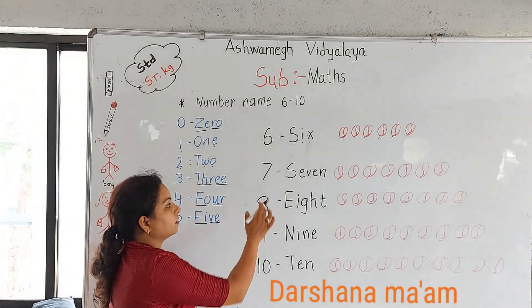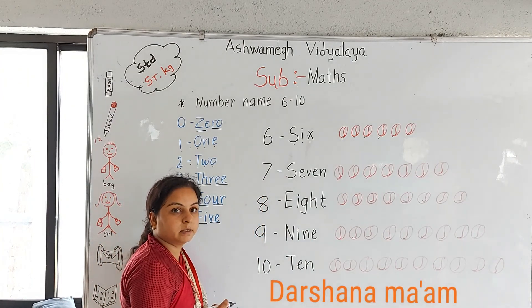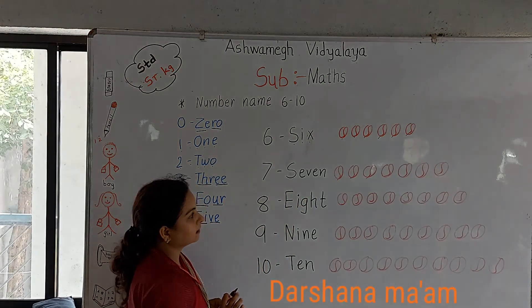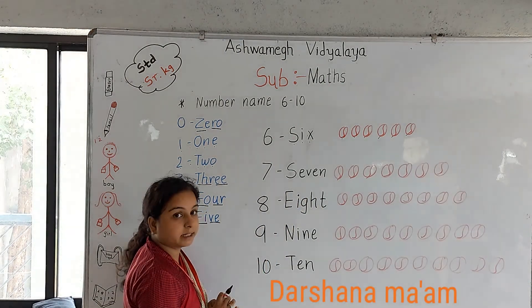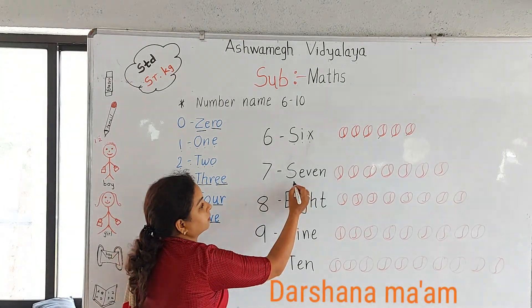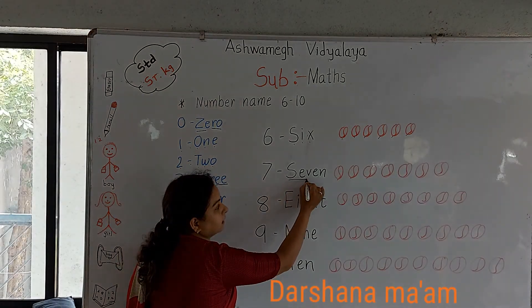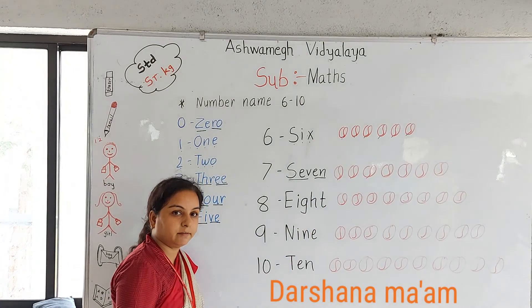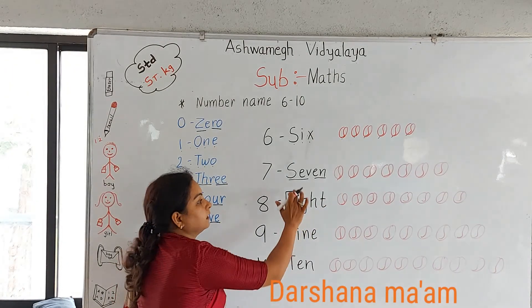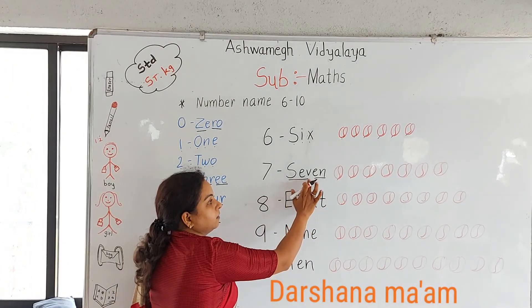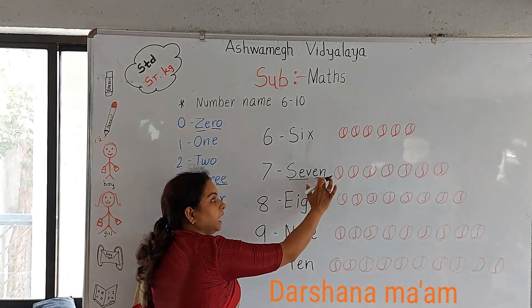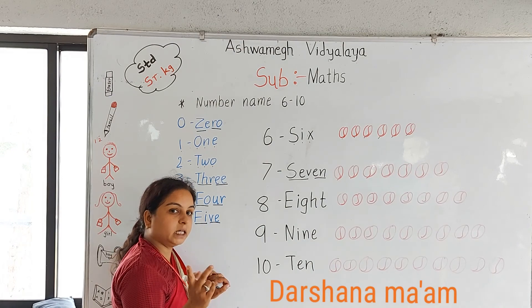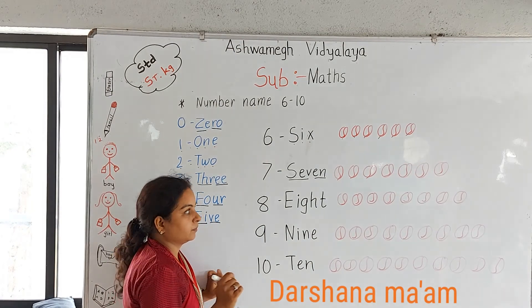Next number is 7. Our next number is 7. How many letters are here? 5. So how many letters? 5. See with me: S-E-V-E-N - 7. Again: S-E-V-E-N - 7.